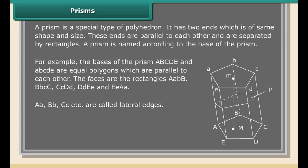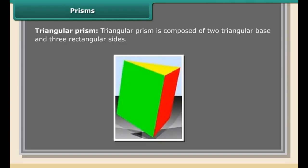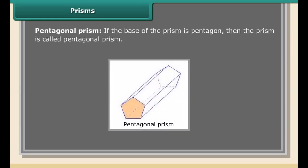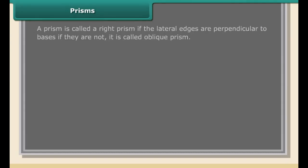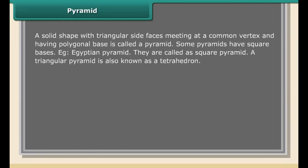The solids which are convex and whose faces, edges, and angles are congruent are called regular convex polyhedrons. Examples include tetrahedron, cube, octahedron, dodecahedron, and icosahedron. A regular octahedron is an octahedron with eight equilateral triangles as faces.